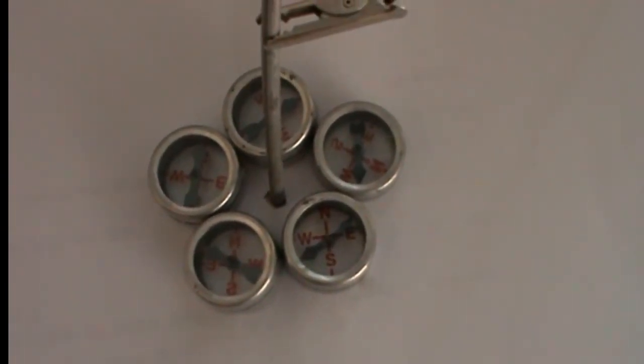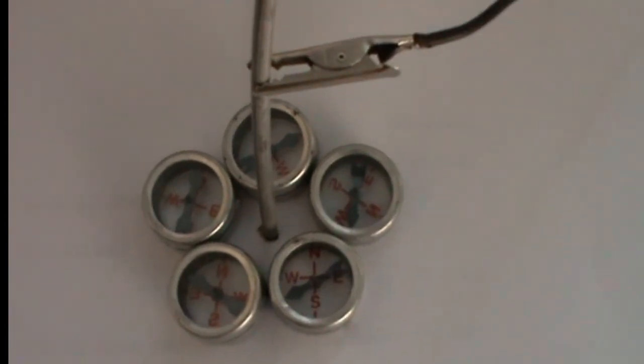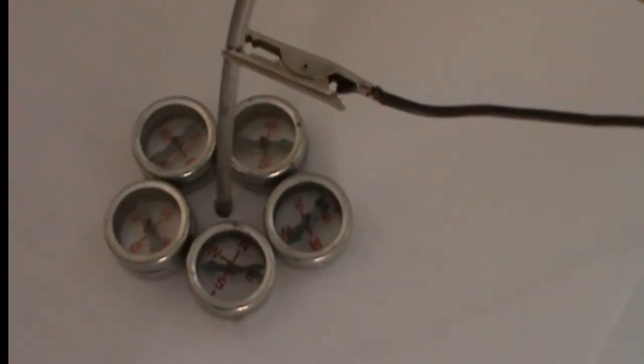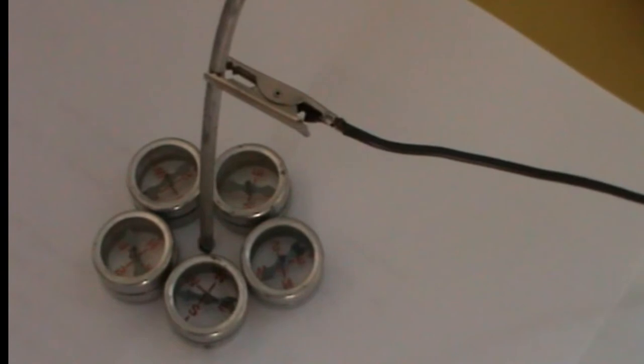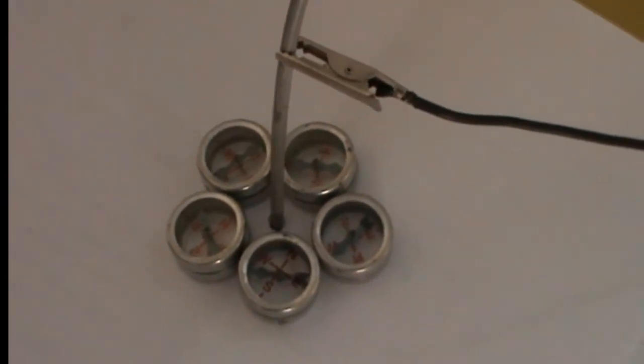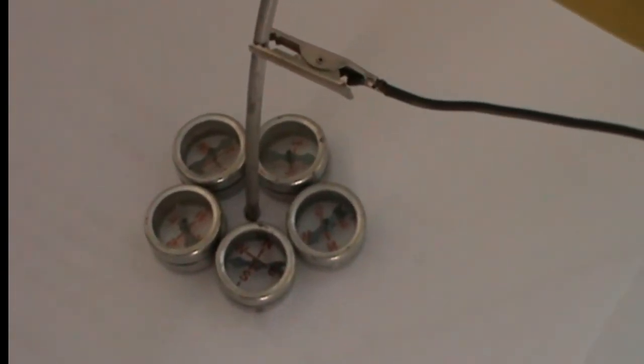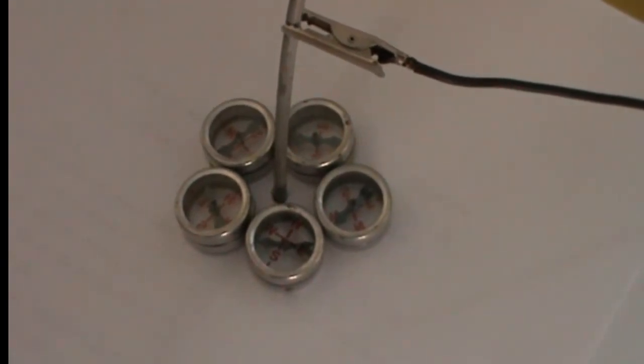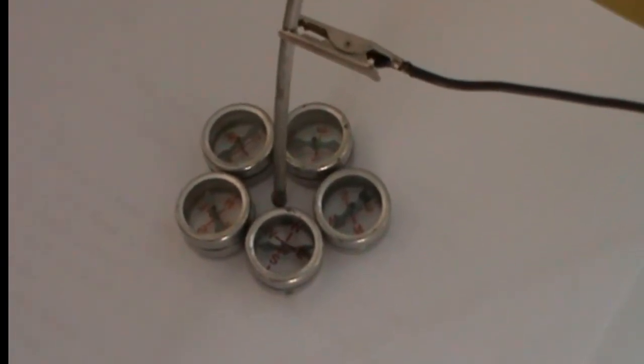Each and every compass needle's north pole is followed by the south pole of the other and so on. So you can see a nice circular pattern here which visualizes the right hand grip rule.